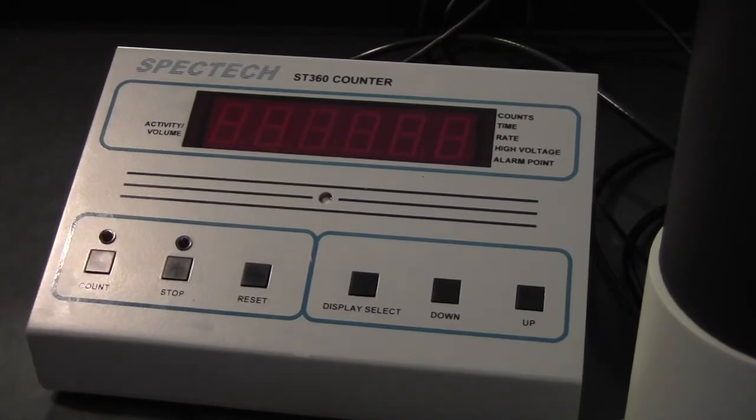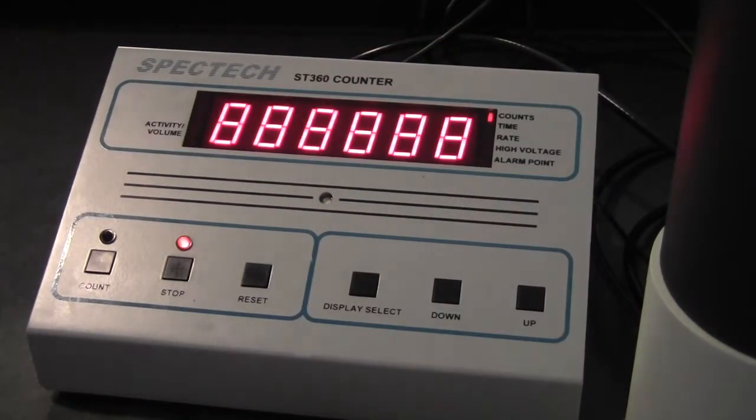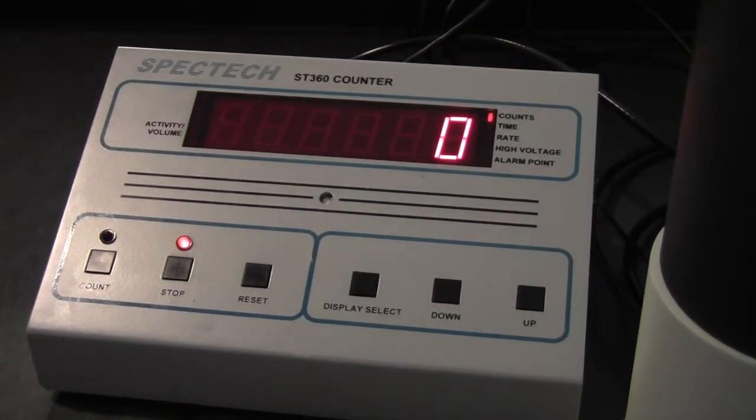It features the ST360 radiation counter, a digital rate meter with alarm for contamination survey work. It displays counts, counts per second, counts per minute, and has an extra-large LED display that is clear and visible.